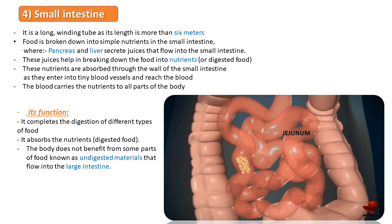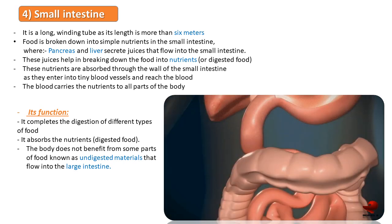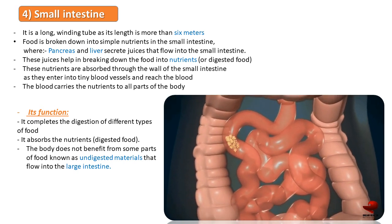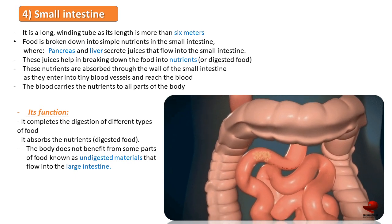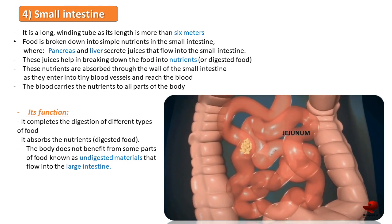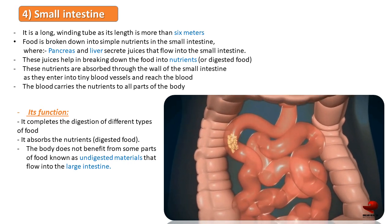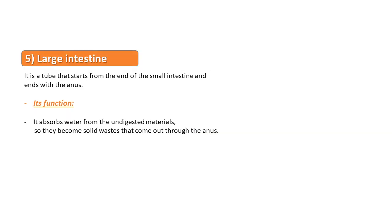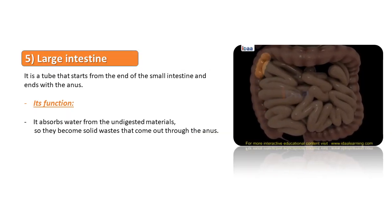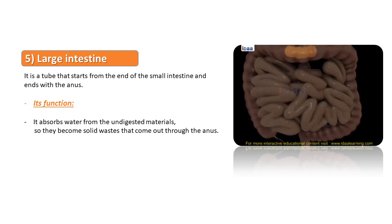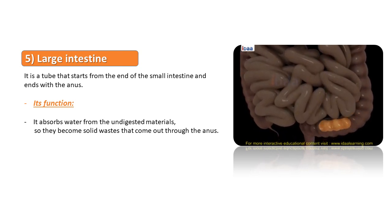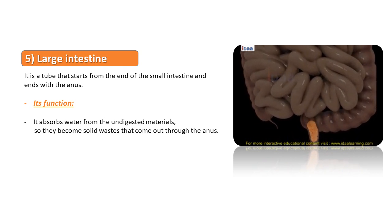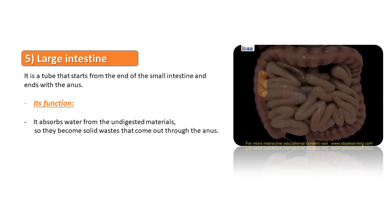The body does not benefit from some parts of food known as undigested materials, which flow into the large intestine. The large intestine is a tube that starts from the end of the small intestine and ends with the anus. Its function is to absorb water from the undigested materials so they become solid wastes that are expelled out through the anus.